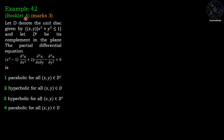Example number 42 from booklet A, marks 3. Let D denote the unit disk {(x,y) : x² + y² ≤ 1} and D^c its complement. The PDE (x²-1) ∂²u/∂x² + 2y ∂²u/∂x∂y − ∂²u/∂y² = 0 is: parabolic for all (x,y) in D^c; hyperbolic for all (x,y) in D; hyperbolic for all (x,y) in D^c and parabolic for all (x,y) in D.